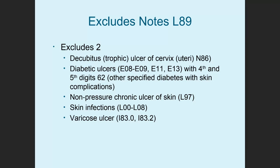The first thing to note is that under the pressure ulcer category L89 there is an excludes two note. Remember that an excludes two note means that when appropriate, you can list two codes. So pressure ulcer codes may be listed with decubitus ulcers of the cervix N86, diabetic ulcers using fourth and fifth digits 6-2 for codes E8, E9, E11, and E13. Pressure ulcers might also occur with a non-pressure chronic ulcer L97, skin infections, and varicose ulcers. If the documentation includes one of these conditions and a pressure ulcer, you code for both.